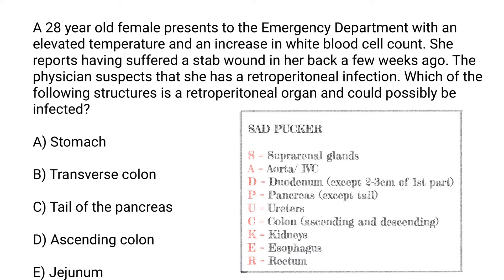First answer choice: stomach. We know that the stomach is going to be an intraperitoneal organ, therefore we can eliminate it. The transverse colon is also going to be an intraperitoneal organ.